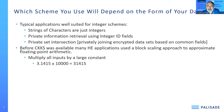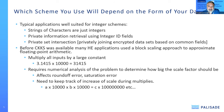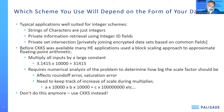Before CKKS was available, many HE applications used a block scaling approach, where you multiply all inputs by a large constant and carry them as integers. This requires numerical analysis to determine the scale factor, because selection of that factor affects roundoff error and saturation error. You also need to track the increase of scales during multiplies — multiplying two scaled numbers gives a result scaled by the square of those values, so you can easily run out of bits. We generally suggest you don't do this anymore; use CKKS instead.